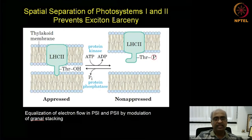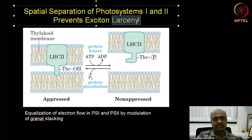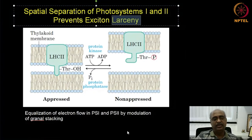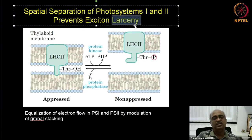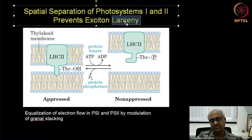This is how equalization of electron flow in photosystem 1 and photosystem 2 is modulated by light itself. Light activates these two enzymes: bright light activates the kinase, dim light activates the phosphatase. This is what they call larceny — photosystem 1 stealing the electrons from photosystem 2.